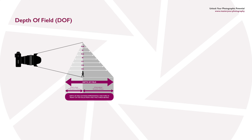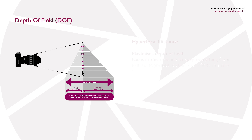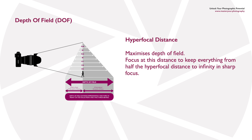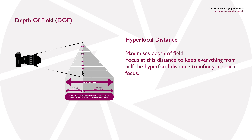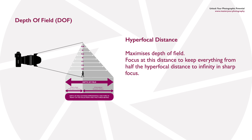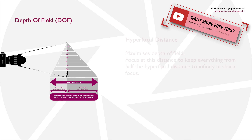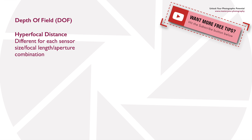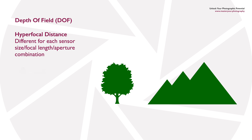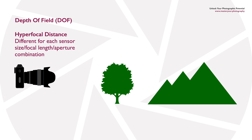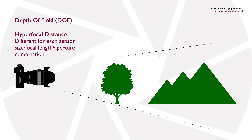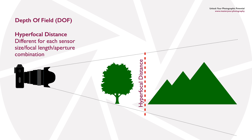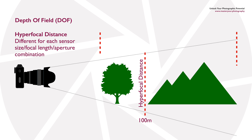You may have heard of something called the hyperfocal distance. This is the distance that maximizes the depth of field, so if you focus at the hyperfocal distance then you will keep everything from half of that hyperfocal distance to infinity in sharp focus. So if we look at this example where maybe you shoot a landscape and let's say the hyperfocal distance is 100 meters, then everything from 50 meters to infinity will actually be in focus.